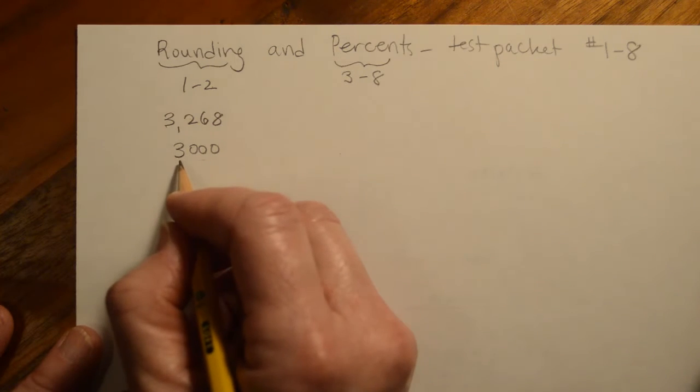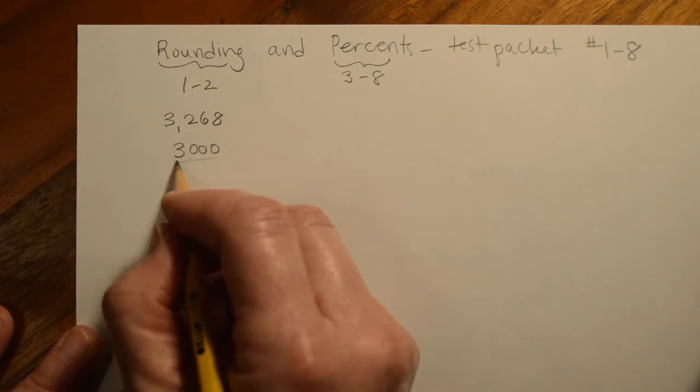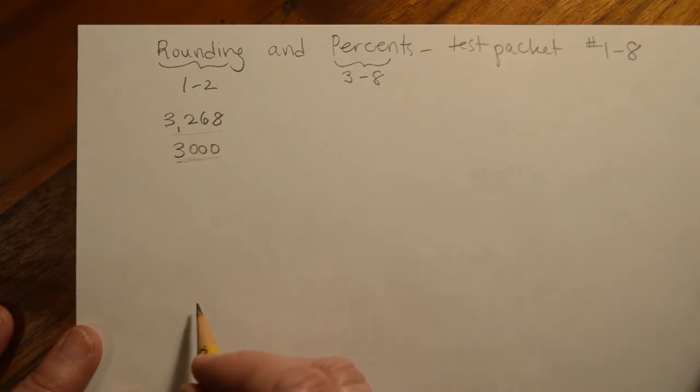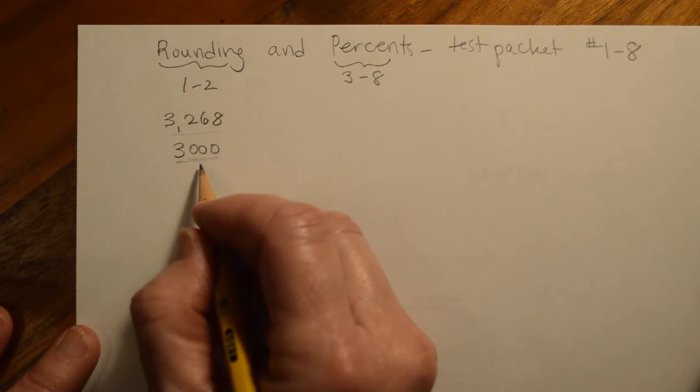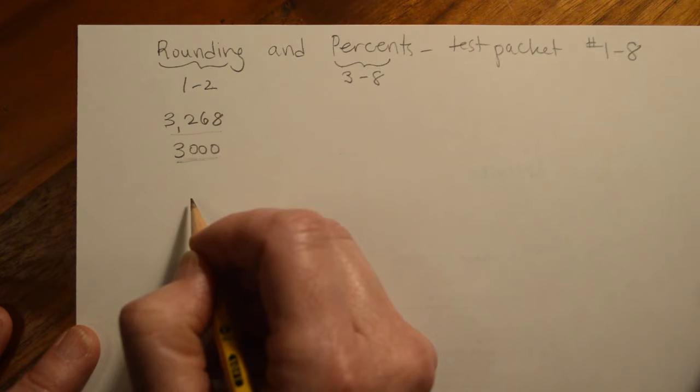We generally use rounding because either we don't need an exact answer or because we're trying to get a nice number. 3,000 is a lot nicer to work with than 3,268. So we round and just make our numbers a little bit easier to use.